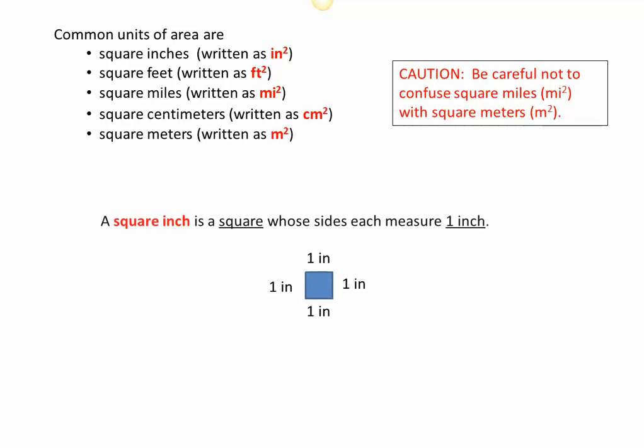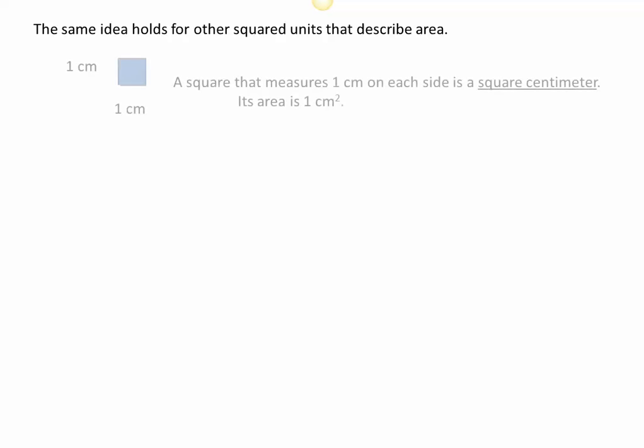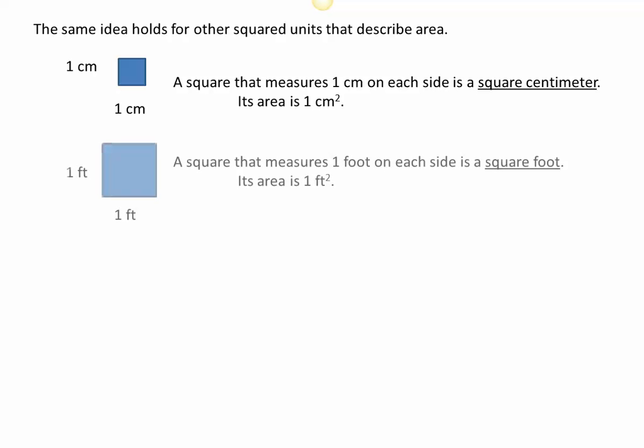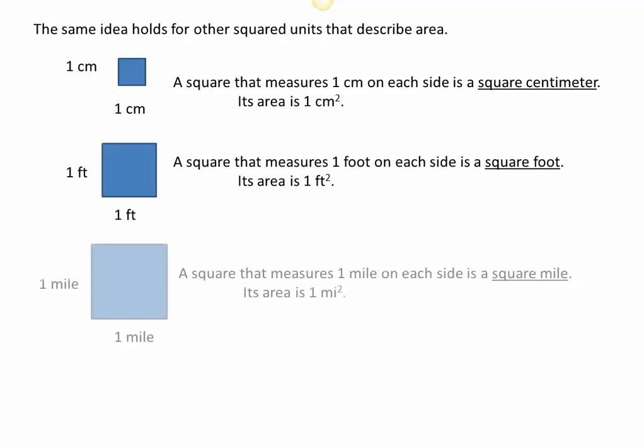A square inch is a square whose sides each measure one inch. When we talk about area in square inches, we're telling someone how many of those little squares it takes to cover a particular region. The same idea extends to all other units: a square centimeter measures one centimeter on each side, a square foot measures one foot on each side, and a square mile measures one mile on each side.